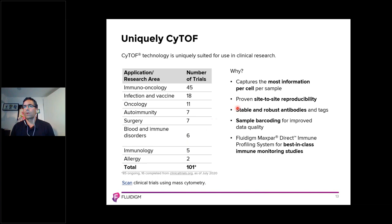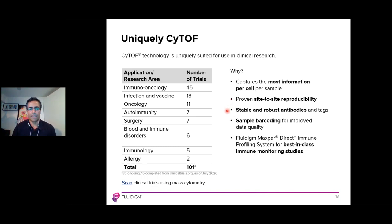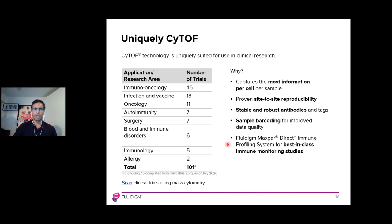Why is CyTOF well suited for clinical trials? It captures the most information per cell per sample. It has proven site-to-site reproducibility, as I'll discuss later. There are stable and robust antibody tags. Sample barcoding can also improve data quality, and together with the Maxpar Direct immune profiling system it performs a best-in-class immune monitoring approach.